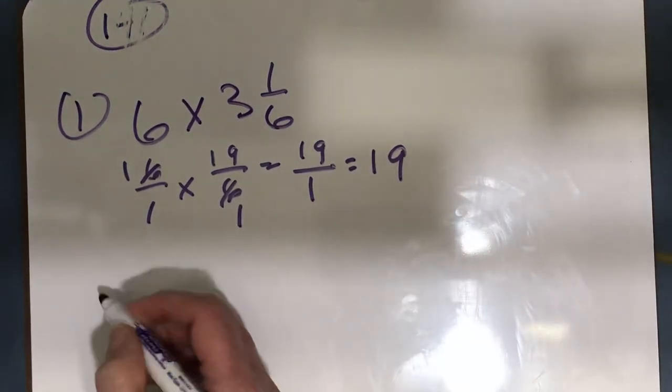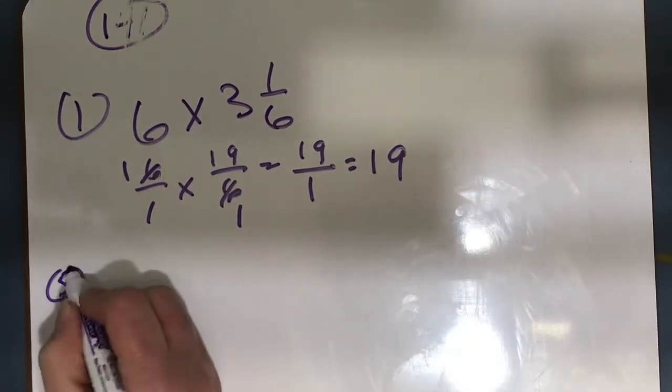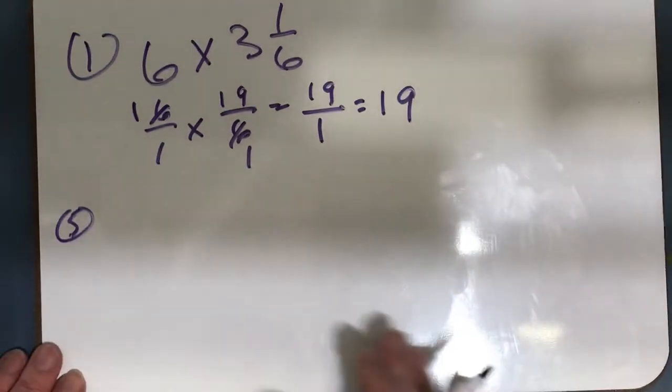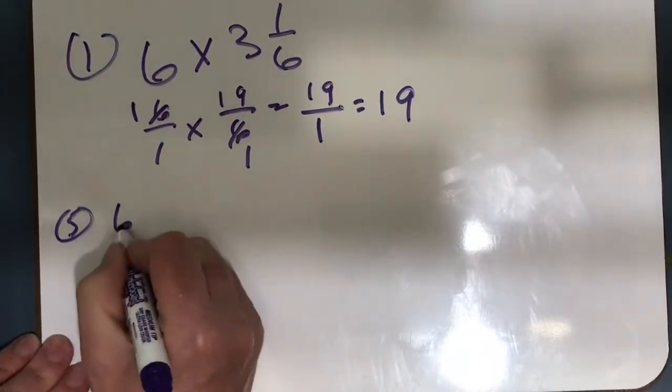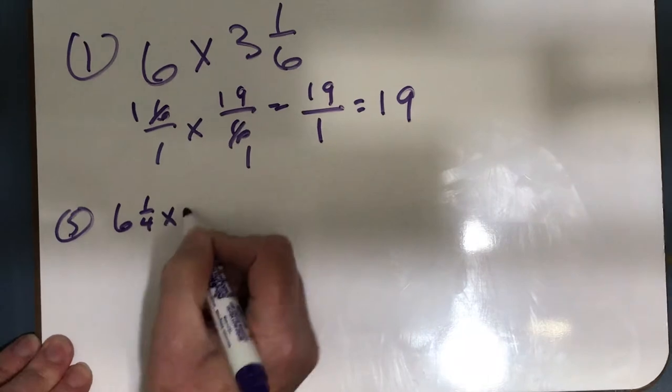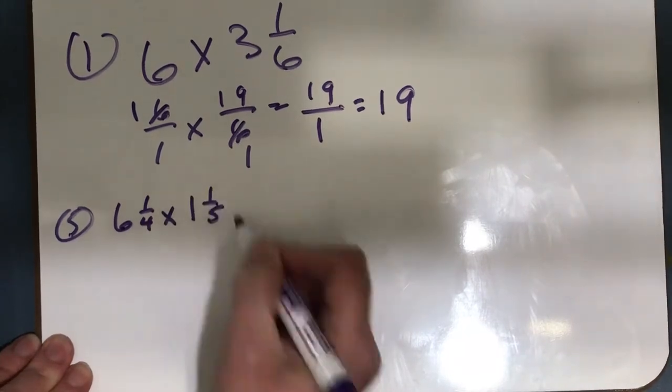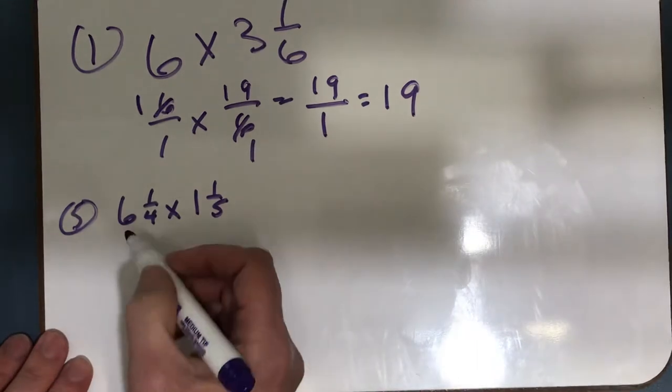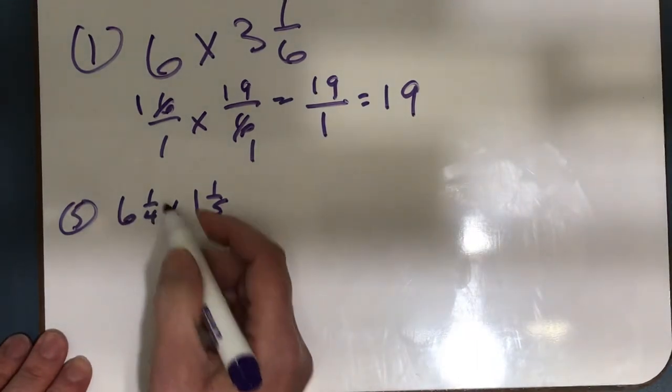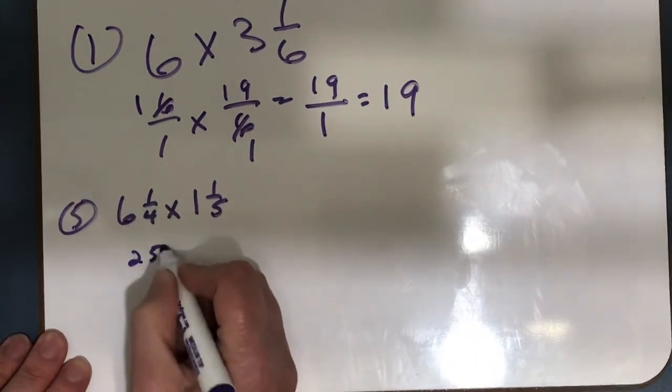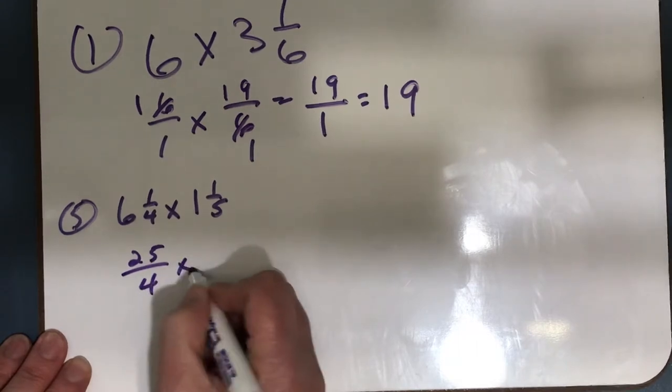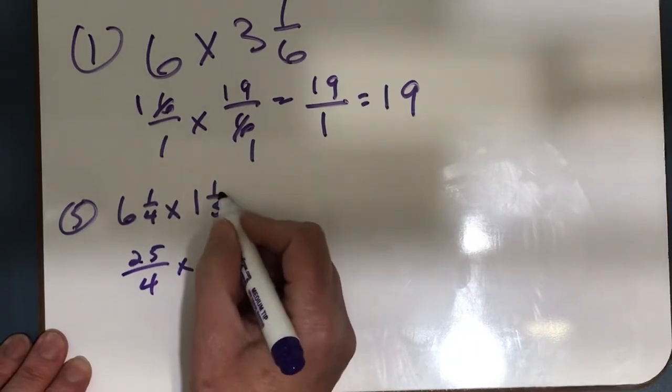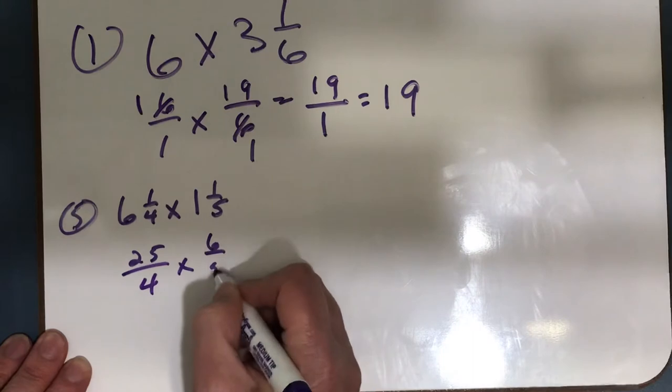Now let's look at number 5: 6 and 1 fourth times 1 and 1 fifth. I have two mixed numbers, so I have to change both of those to improper fractions. 6 times 4 is 24 plus 1 is 25, so 25 fourths. 1 times 5 is 5 plus 1 is 6, so 6 fifths.